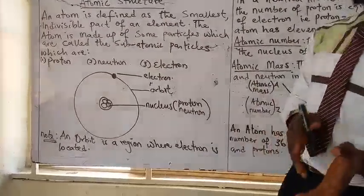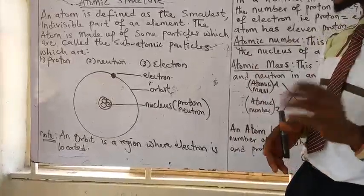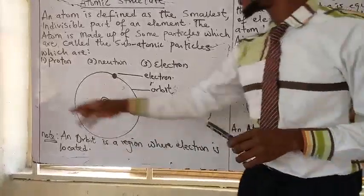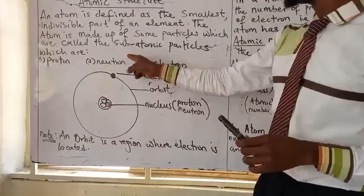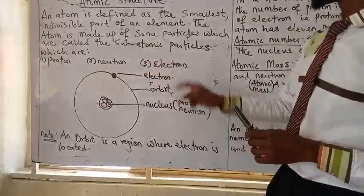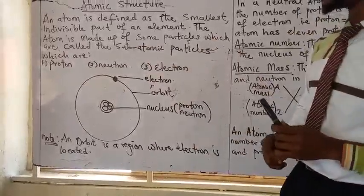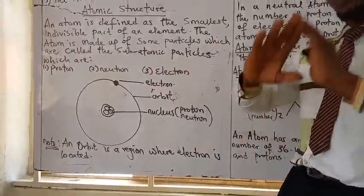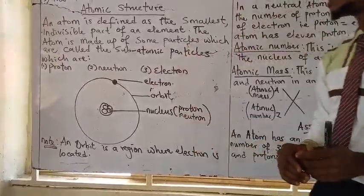What are the names of these subatomic particles? There are three in number. Number one we have the proton, we have the neutron, and number three we have the electron.